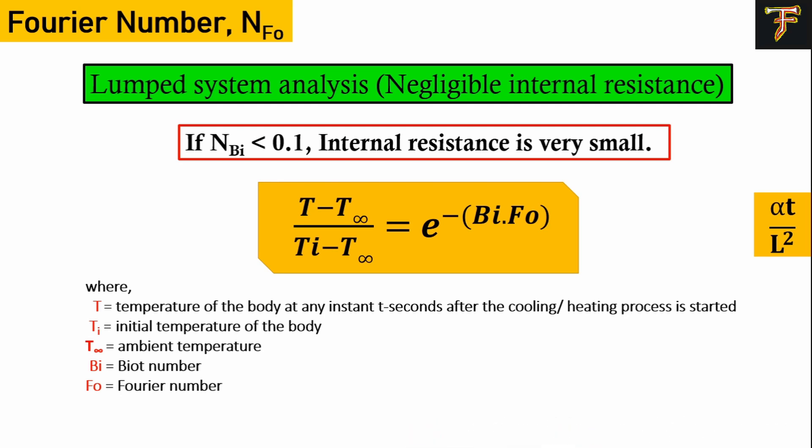When you derive the transient heat transfer equation considering lumped system analysis, you'll end up with (T - T∞)/(Ti - T∞) = e^(-Bi·Fo), where T is the body temperature at any instant, T∞ is surrounding temperature, and Ti is initial body temperature. This is where you can use the Fourier number.